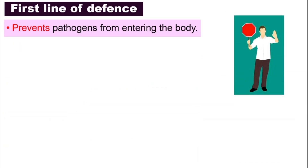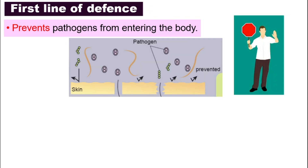For the first line of defense, all our body does is to prevent pathogens from entering into our bodies — no entry, do not go into our body. The one that plays a very important role, of course, is our skin. Let's take a look at this image here. Let's say this purple stuff here and the green chain, they are the pathogens and they try to get into your body. So the first line of defense that is going to protect us is the skin.